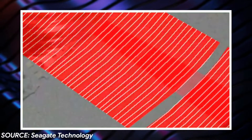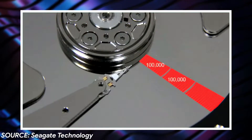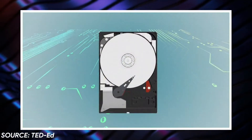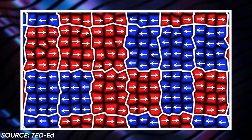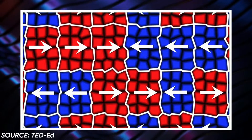Depending upon the capacity, there are multiple platters inside a hard disk drive, and each platter has several tracks in it, which are nothing but the concentric circles found on the surface of the platters. There are also pie-shaped divisions called sectors, which further subdivide into thousands of subdivisions, with each subdivision capable of accepting a magnetic charge.